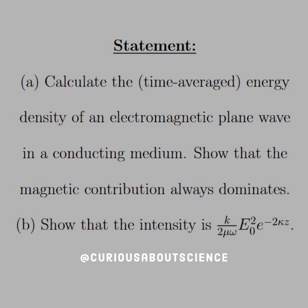Revisit last question. And part B, show that the intensity is K over 2 mu omega E naught squared E to the negative 2 kappa Z.